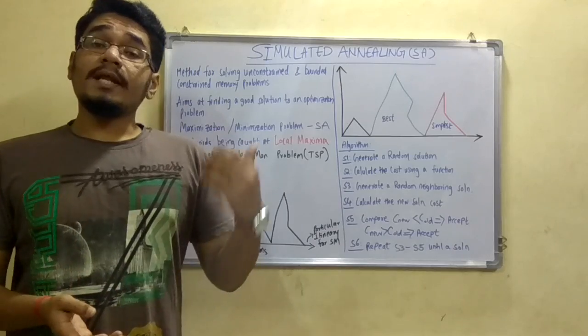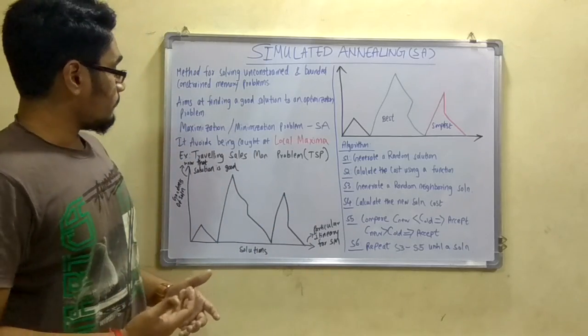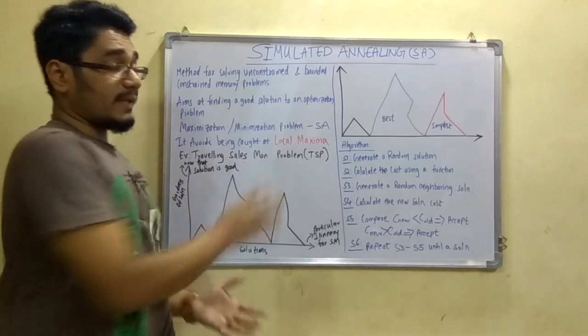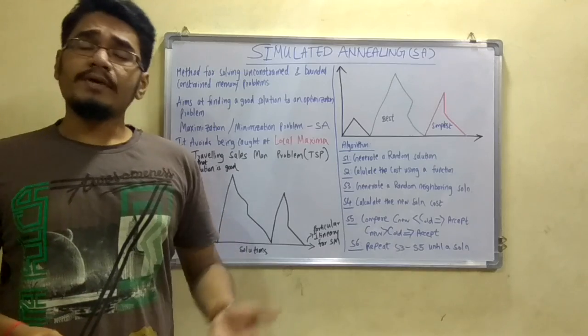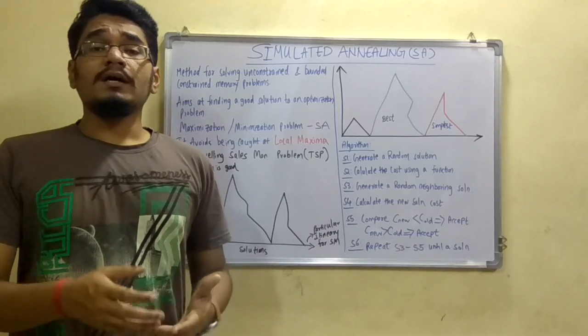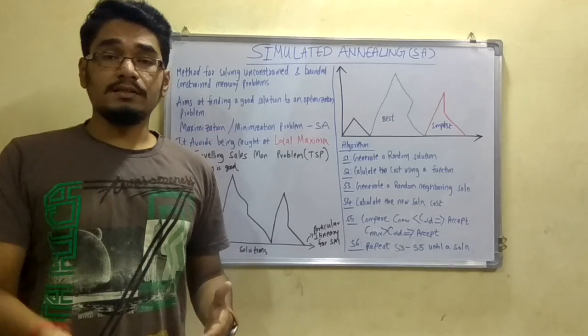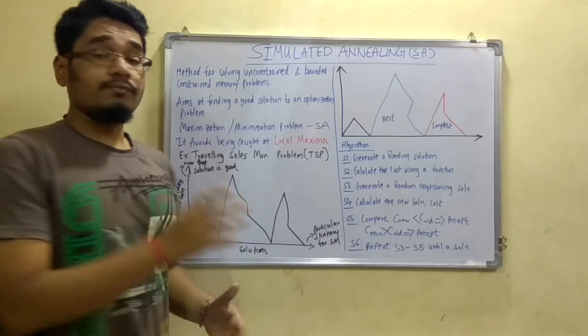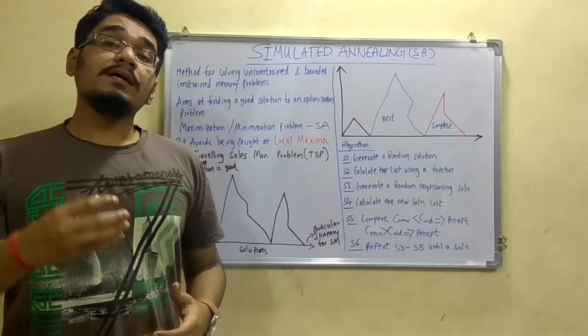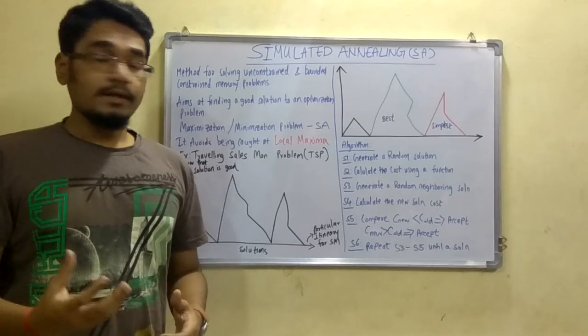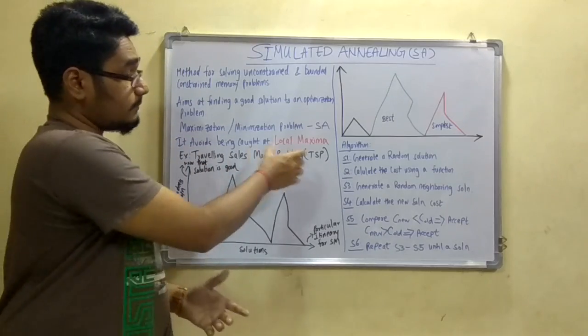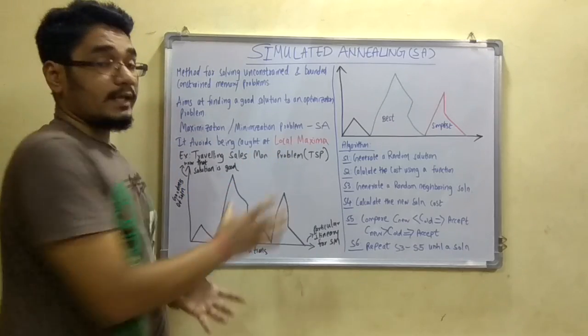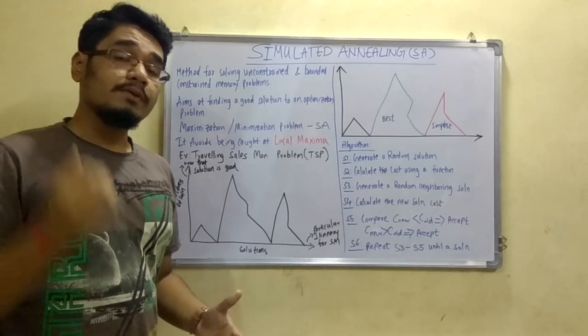It avoids being caught at local maxima. This is the main highlight for simulated annealing. We have seen many other algorithms like hill climbing, stochastic hill climbing, and A-star search. These problems have the main devil of local maxima. Simulated annealing is the most optimized way to reduce this problem, the local maxima. This is the main area where simulated annealing plays a major role.